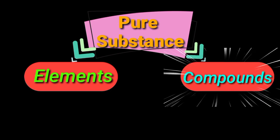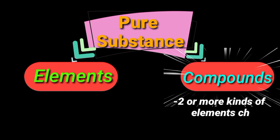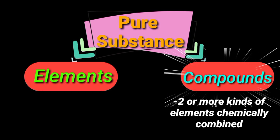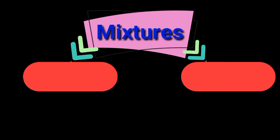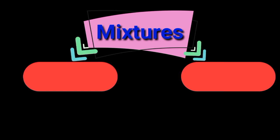A compound, sometimes called a chemical compound, is a substance composed of two or more elements combined in definite proportions, and has properties different from those of its component elements. Most of the materials around us are mixtures. A mixture can be separated by physical means into two or more substances and, unlike a compound, has a variable composition. There are two types of mixture.